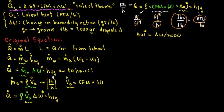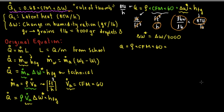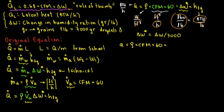So now Q equals density times CFM times 60 times delta W asterisk, but we're plugging in delta W divided by 7,000, times delta h_fg — the specific enthalpy. For air at standard conditions, density equals 0.075 pounds per cubic feet.